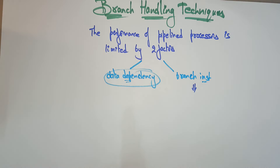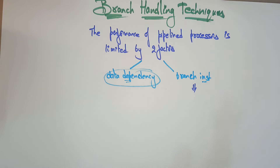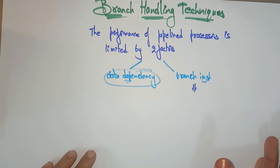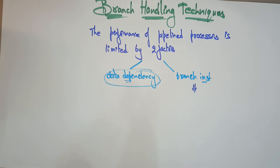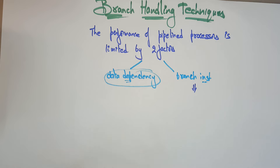The conditional branches — whenever we are talking about branches, the first thing that comes to mind is conditional branches. Whenever the condition is true, the controller will jump to that condition. Whenever the condition is false, the sequence of instructions continues in a sequential manner.